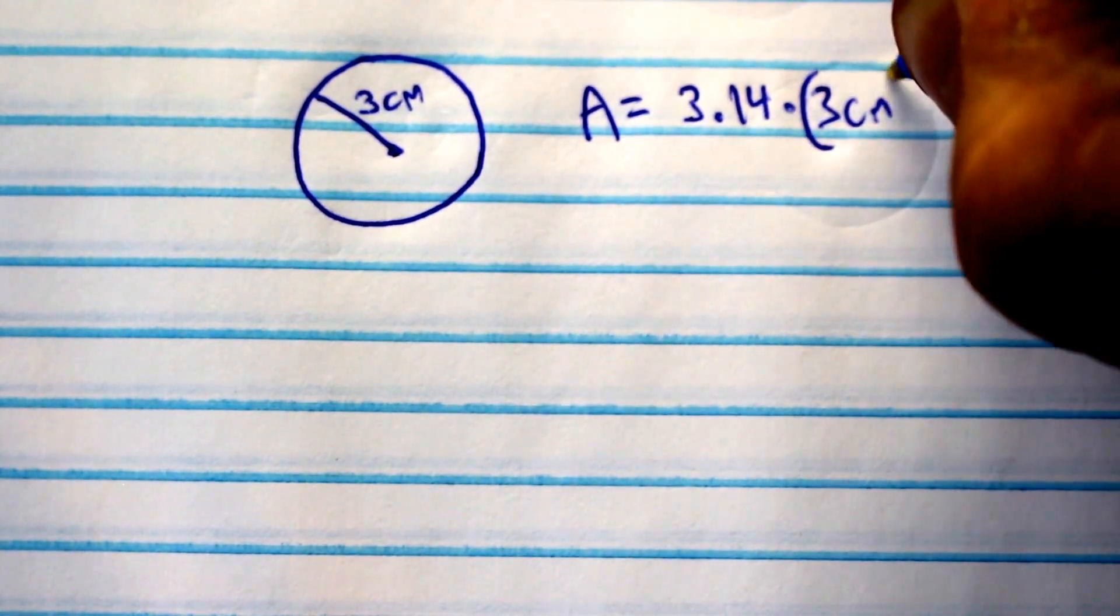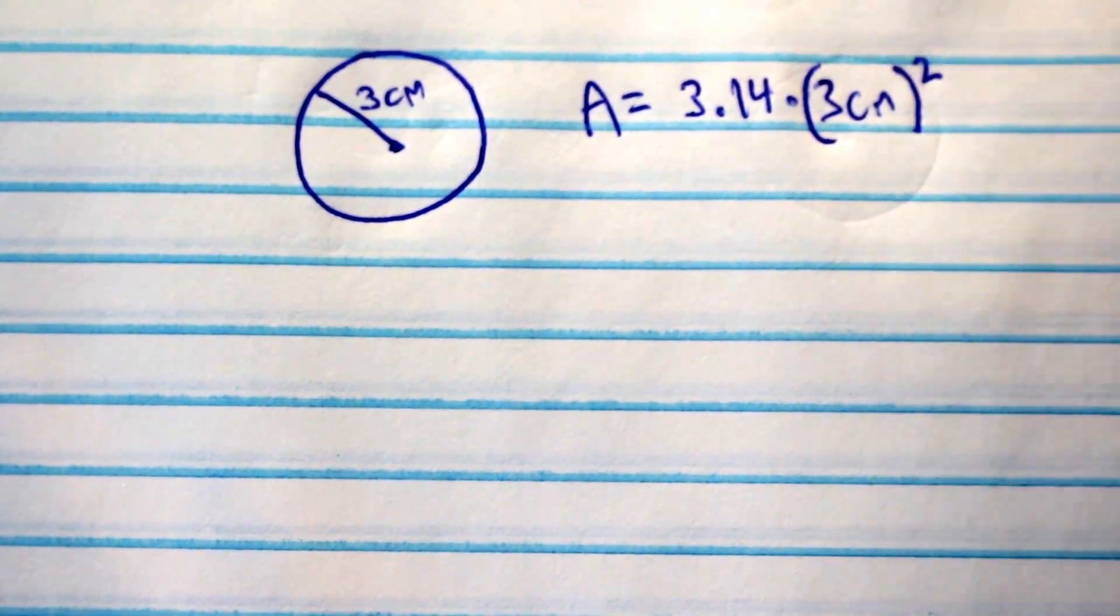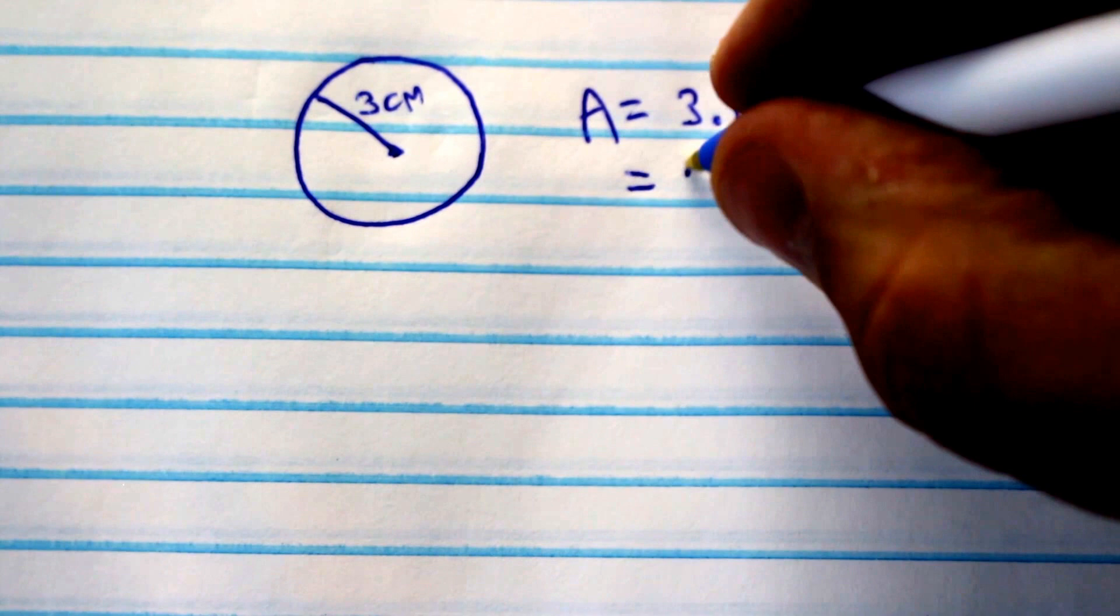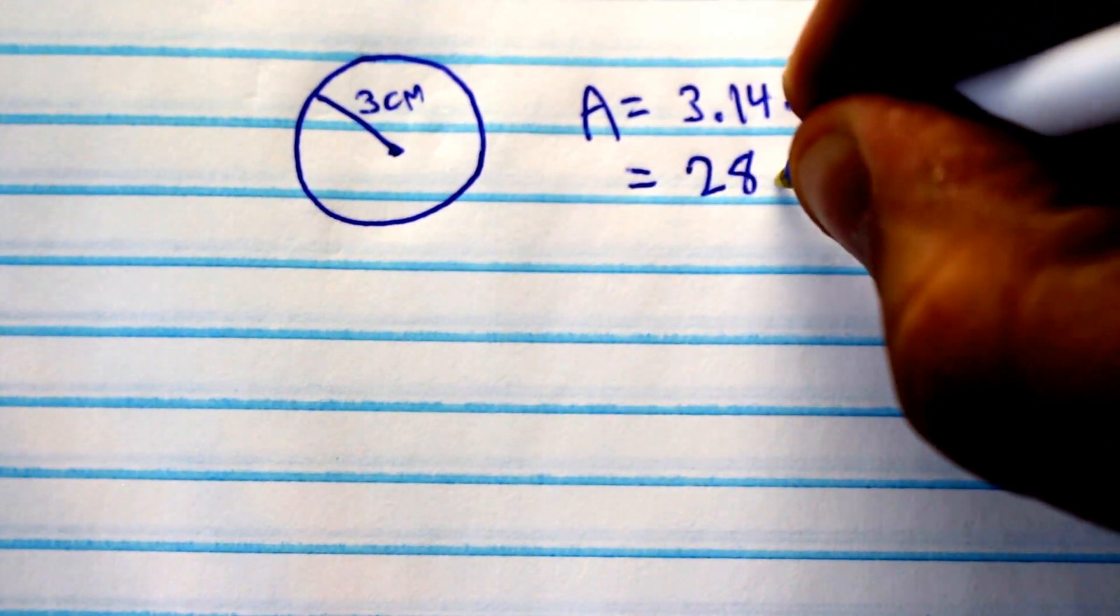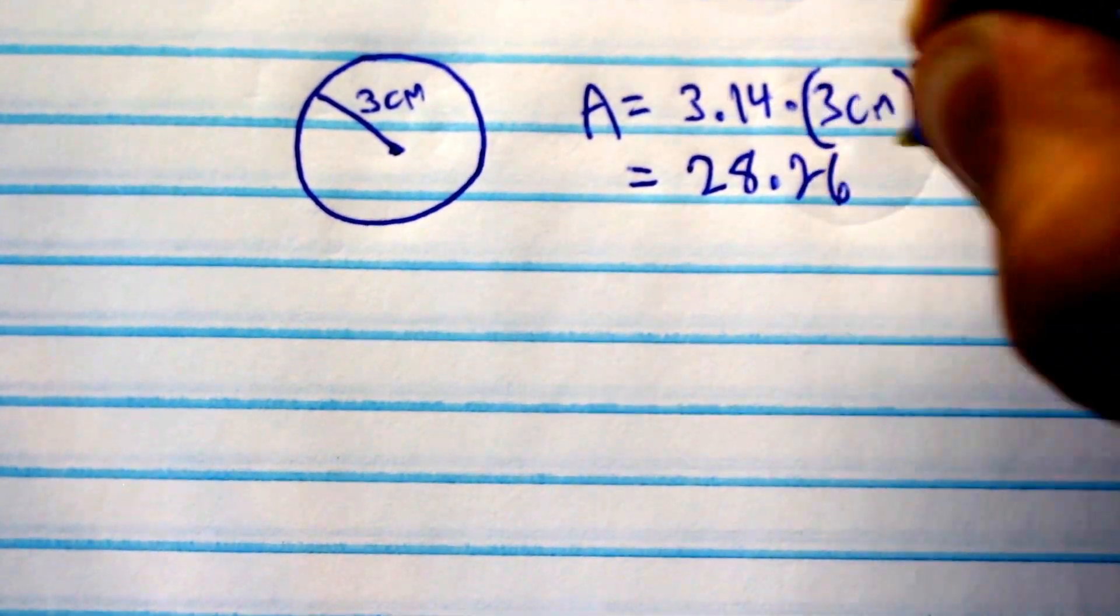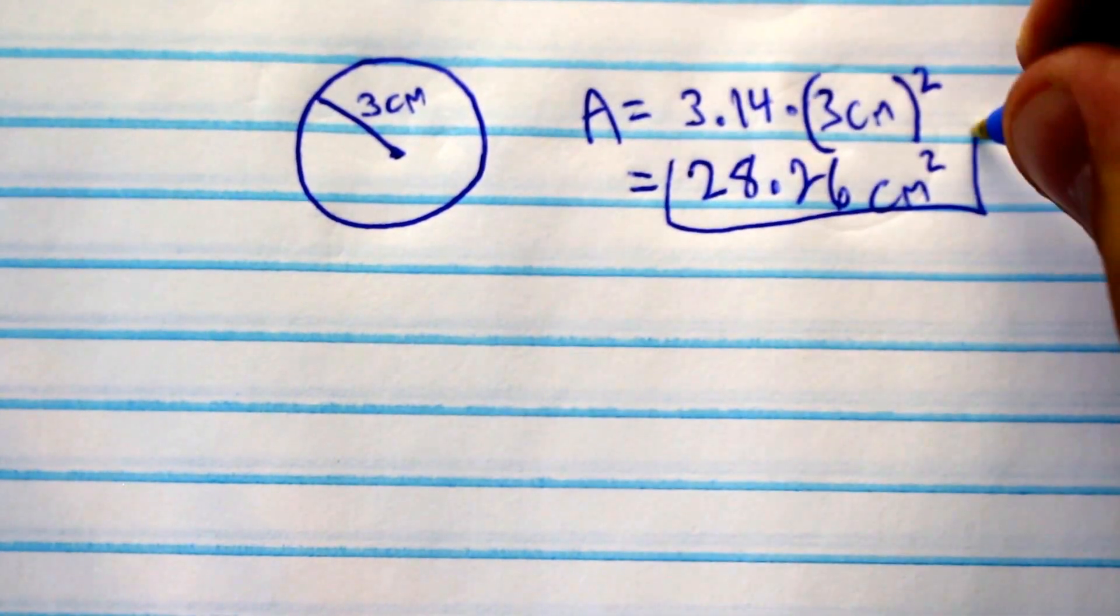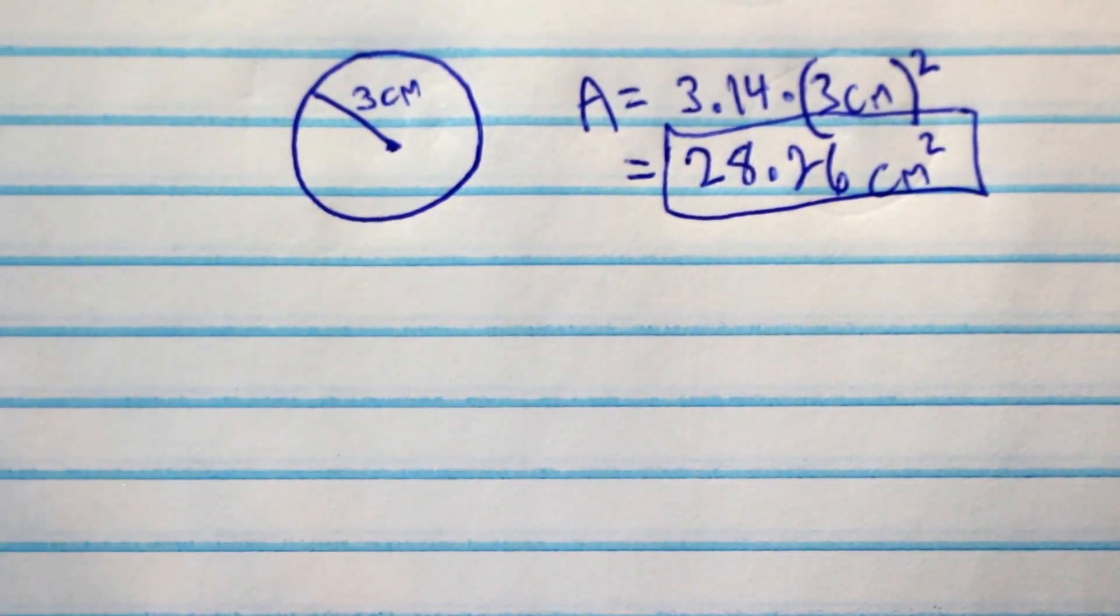And then this whole value gets squared, which gives you 28.26 centimeters squared. That's your area.